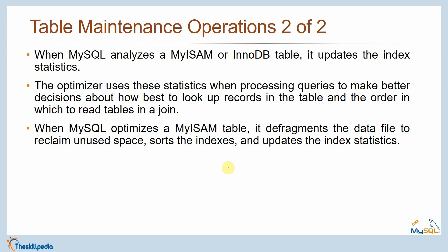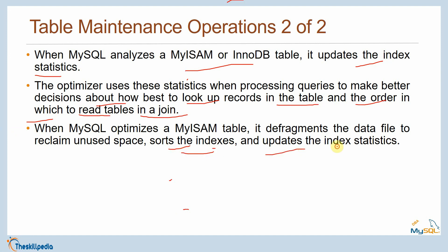Table optimization reorganizes a table so its content can be accessed more efficiently, applicable for both MyISAM and InnoDB. When MySQL analyzes a table, it updates the index statistics; the optimizer uses these statistics when processing queries to make better decisions about how to look up records and the order in which to read tables in a join. When MySQL optimizes a MyISAM table, it defragments the data files to reclaim unused space, sorts indexes, and updates index statistics.